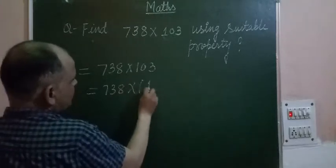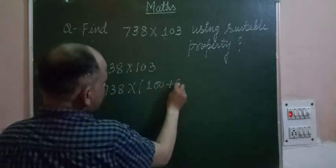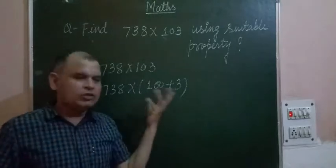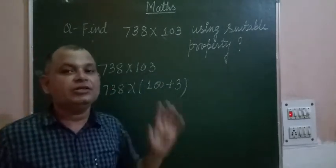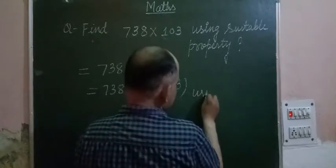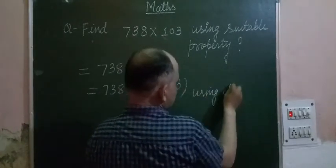Now we distribute this 738 to both the terms, 100 and 3, by using the distributive property.